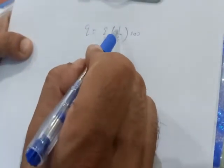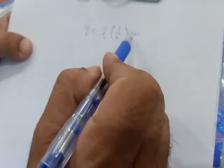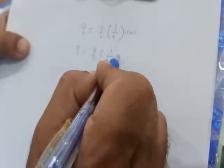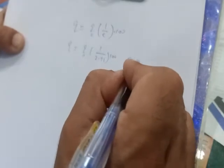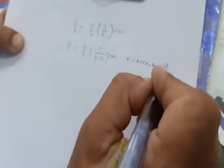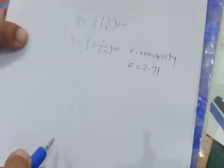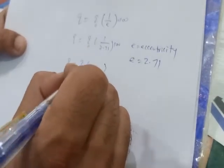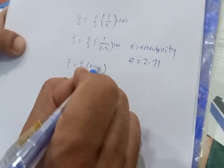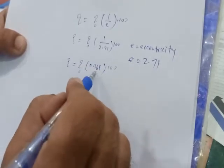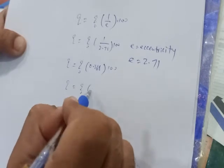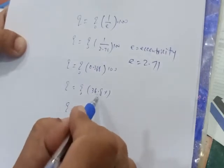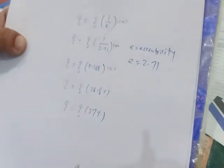Now by putting the value of E, which is 2.71 - remember this E is called eccentricity and it's a mathematical constant - so by putting this value we get Q naught into 0.368 into 100. When we further simplify it, we get 36.8 percent, which when rounded off gives us 37 percent.